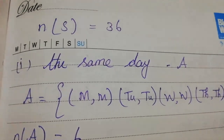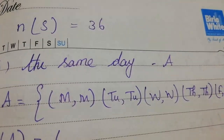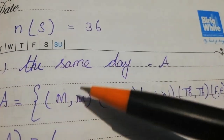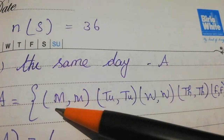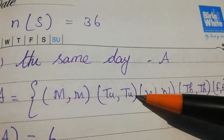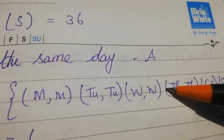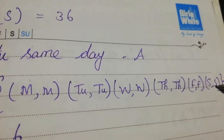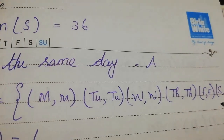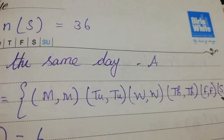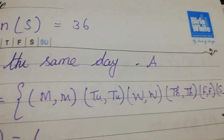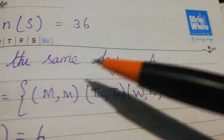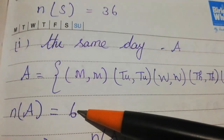The same day outcomes are: Monday-Monday, Tuesday-Tuesday, Wednesday-Wednesday, Thursday-Thursday, Friday-Friday, and possibly one more, giving N(A) = 6. These are the pairs where both Priya and Amudan visit on the same day.